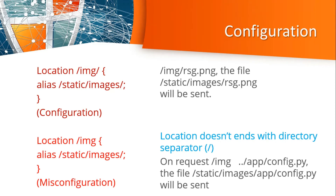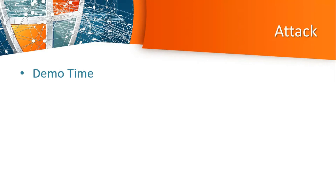Overall, the incorrect configuration of alias — where it doesn't end with a directory separator or forward slash — could allow an attacker to read files stored outside the target folder. Our target folder is images, but we are trying to read app/config.py, which is outside that target folder. If the alias doesn't end with the directory separator, we can read that config.py file. I'll show you in the demo for better understanding.